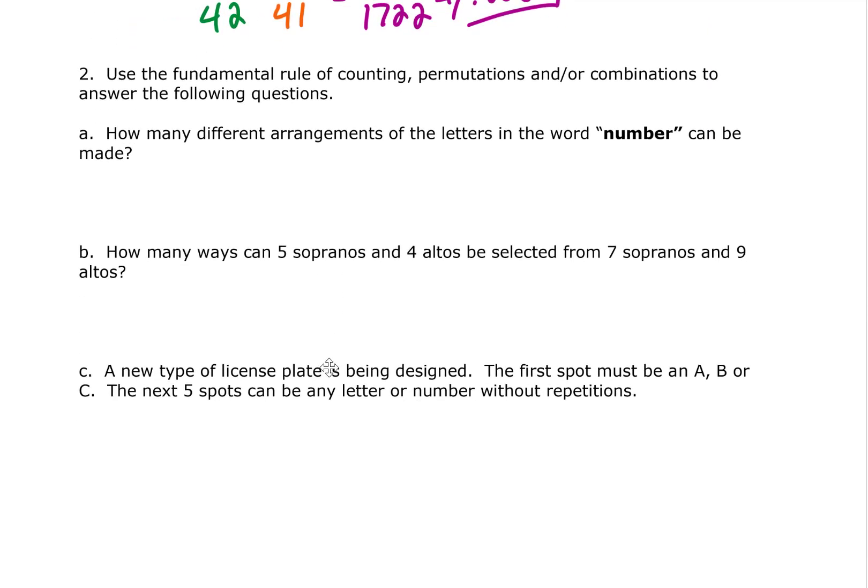Let's keep going with the next problem. How many different arrangements of the letters in the word 'number' can be made? Notice that there are one, two, three, four, five, six different letters here. They're all different and we can arrange them in any number of ways. We have six slots here. We have six options for our choice of our first letter.